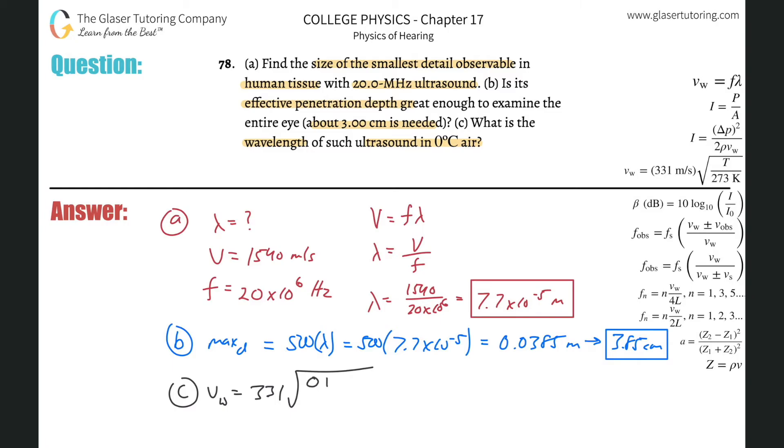Now zero degrees Celsius air, so it's zero plus 273, all divided by 273. So the velocity of the wave is going to be—this literally just works out to one—so it's 331 meters per second.